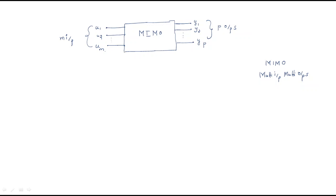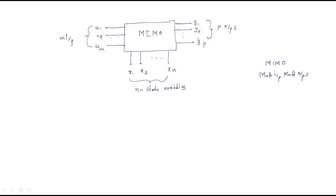The state of the system is represented by state variables X1, X2, up to Xn — these are called n state variables. When input U1 is given, output Y1 is produced and the state is X1; for input U2, output Y2 with state X2; and so on up to Xn.